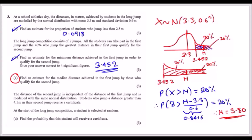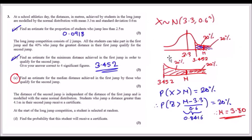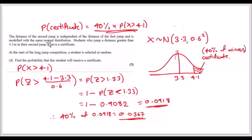Let me know in the comments if the pace is too fast. Part (d): the second jump distance is independent of the first. Students who qualified (top 40%) jump again under the same normal distribution. Students who jump greater than 4.1m in their second jump receive a certificate. So to get a certificate you need to be in the top 40% first, then jump above 4.1m.